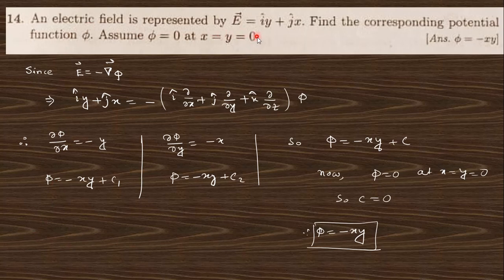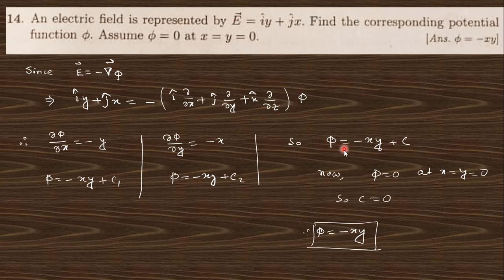Question 14: given an electric field intensity, find the corresponding potential φ. Since E = −∇φ, you equate components. Comparing î and ĵ terms gives φ = −xy + C₁ and φ = −xy + C₂. In common form, φ = −xy + C. Applying the condition φ = 0 at x = 0, y = 0 gives C = 0, so finally φ = −xy.